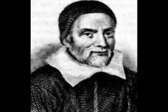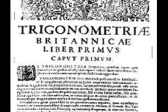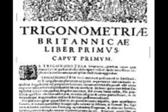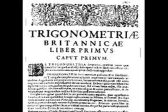In 1616, Briggs visited Napier and suggested the change to Napier's logarithms. After discussing logarithms with Napier, Briggs wrote his own book that included logarithmic tables of sines, tangents, and secants.